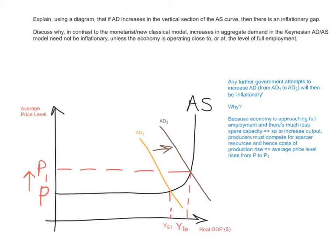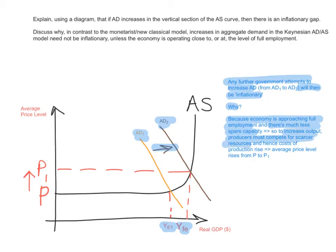What if aggregate demand is at a position AD1, where actual output is closer to the full employment output YFE, but actual output is at YE1? Here, there would be an inflationary gap, because any further attempts to increase aggregate demand from AD1 to AD2 will be inflationary. Why? Because the economy is approaching full employment and there is much less spare capacity. In order to increase output, producers must compete for scarcer resources, and this will raise the costs of production. So, the average price level will rise from P to P1, as there is much less spare capacity and the economy is approaching its full employment level. This happens whenever aggregate demand is closer to or approaching the full employment level of output.